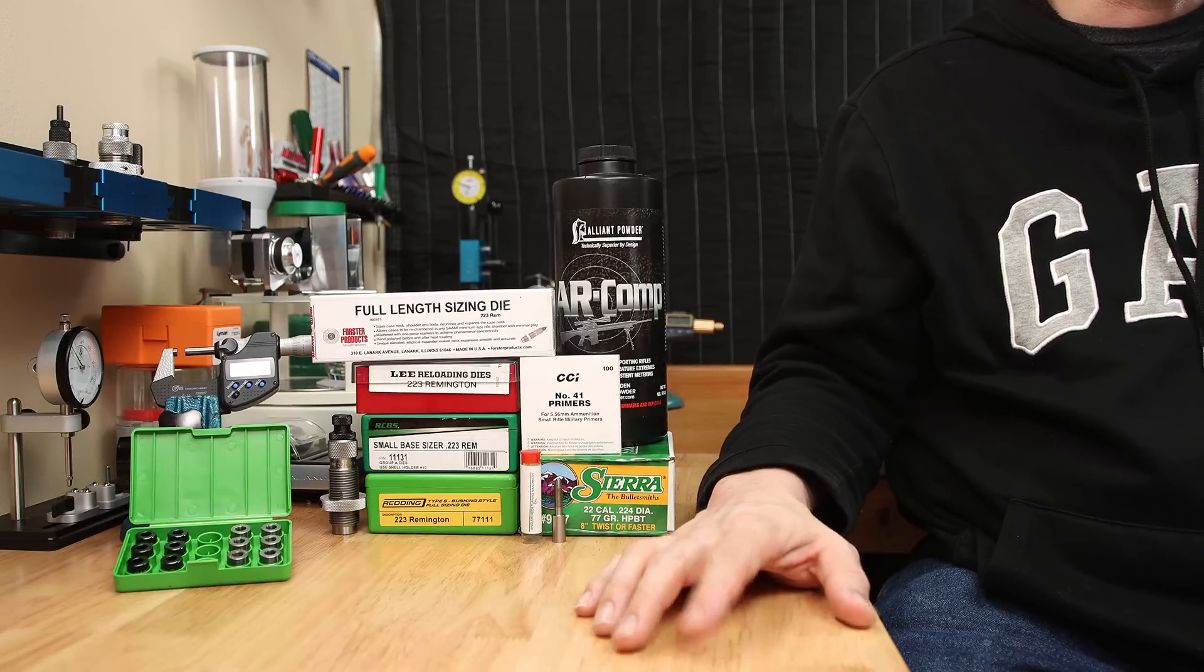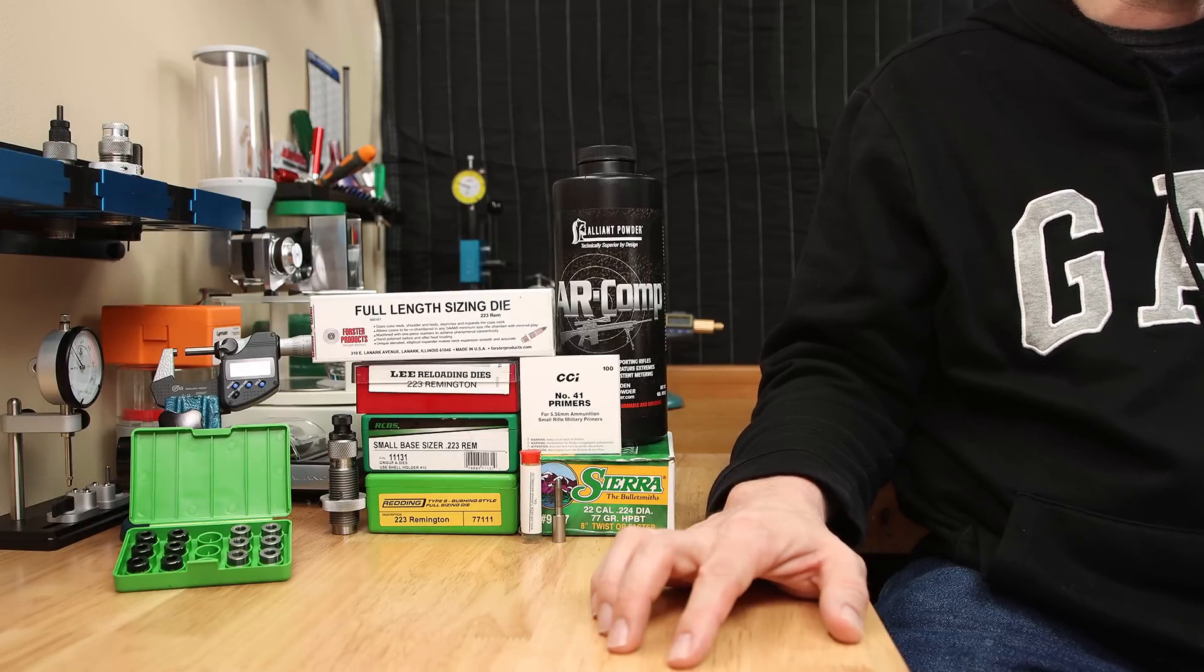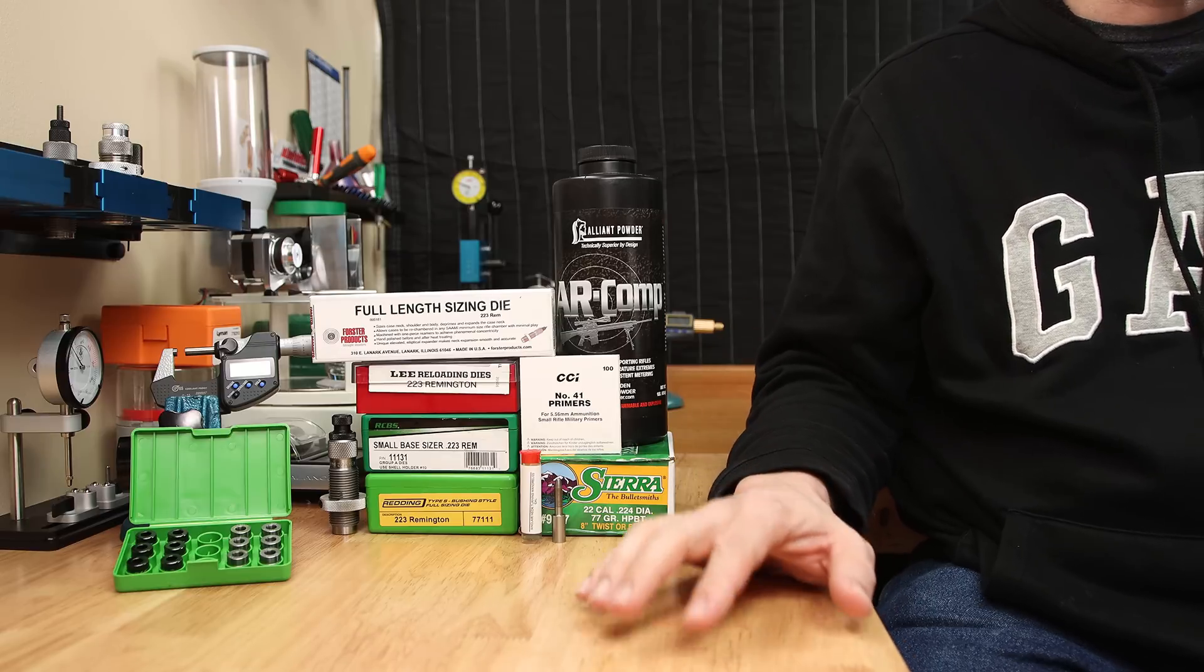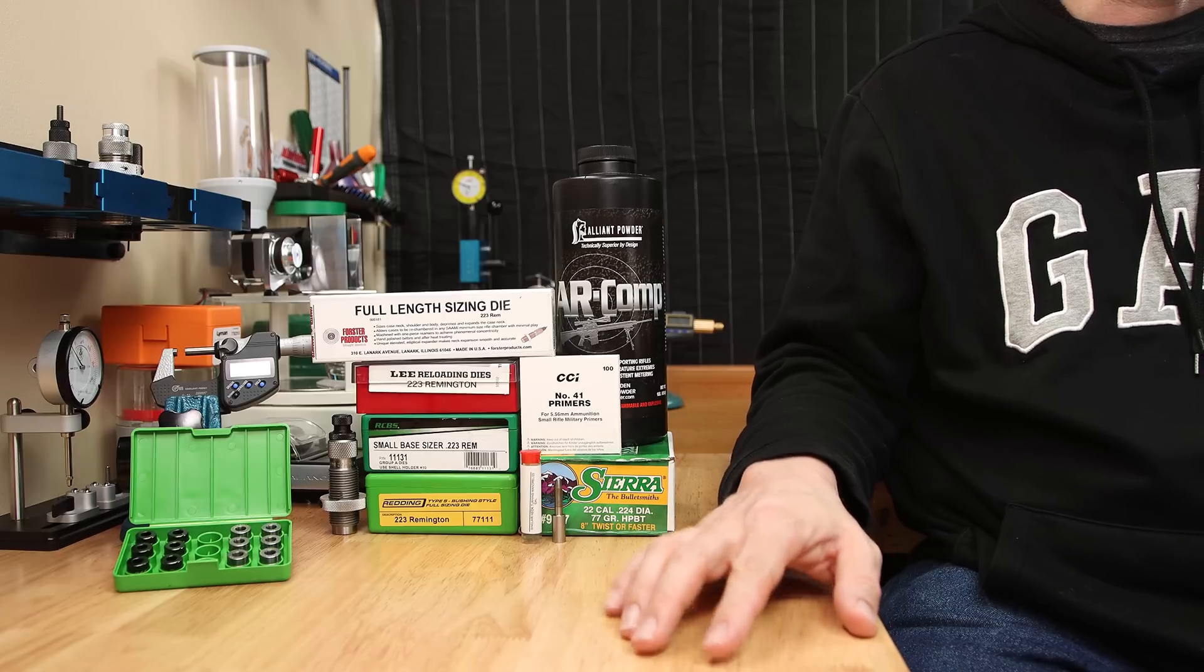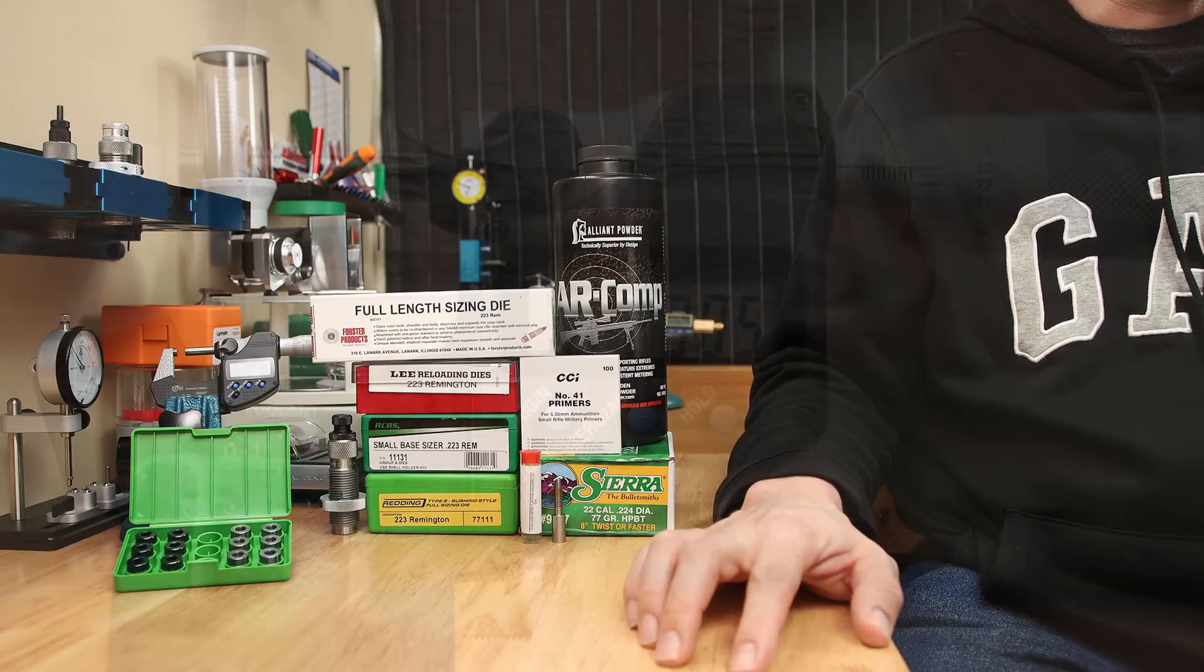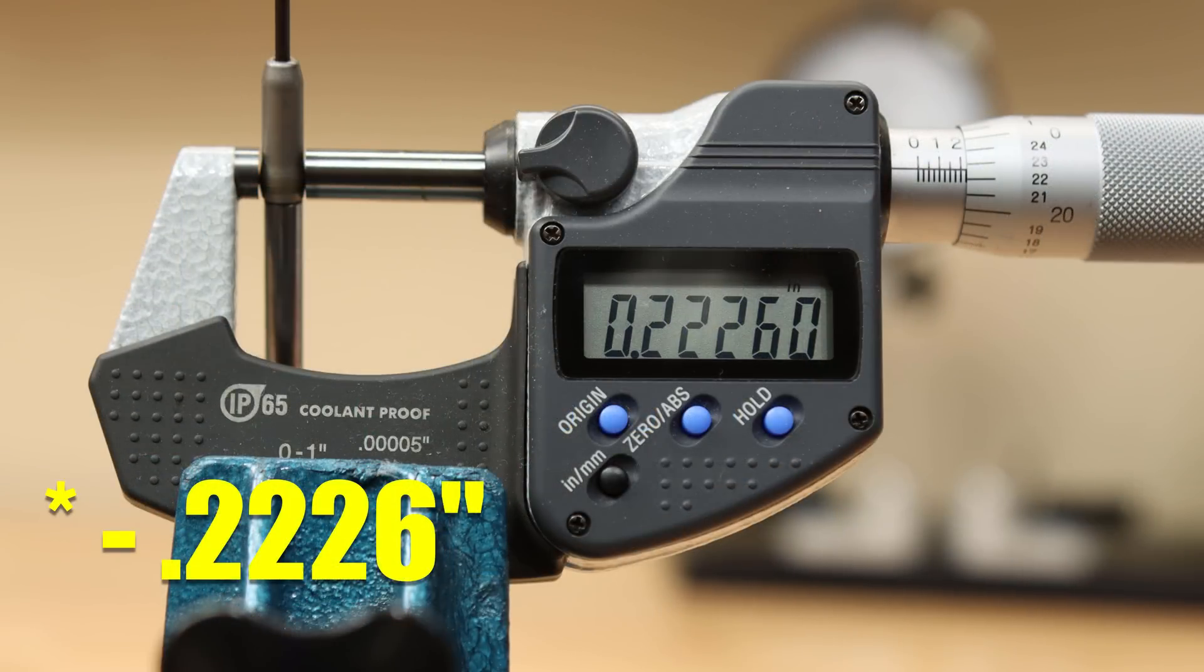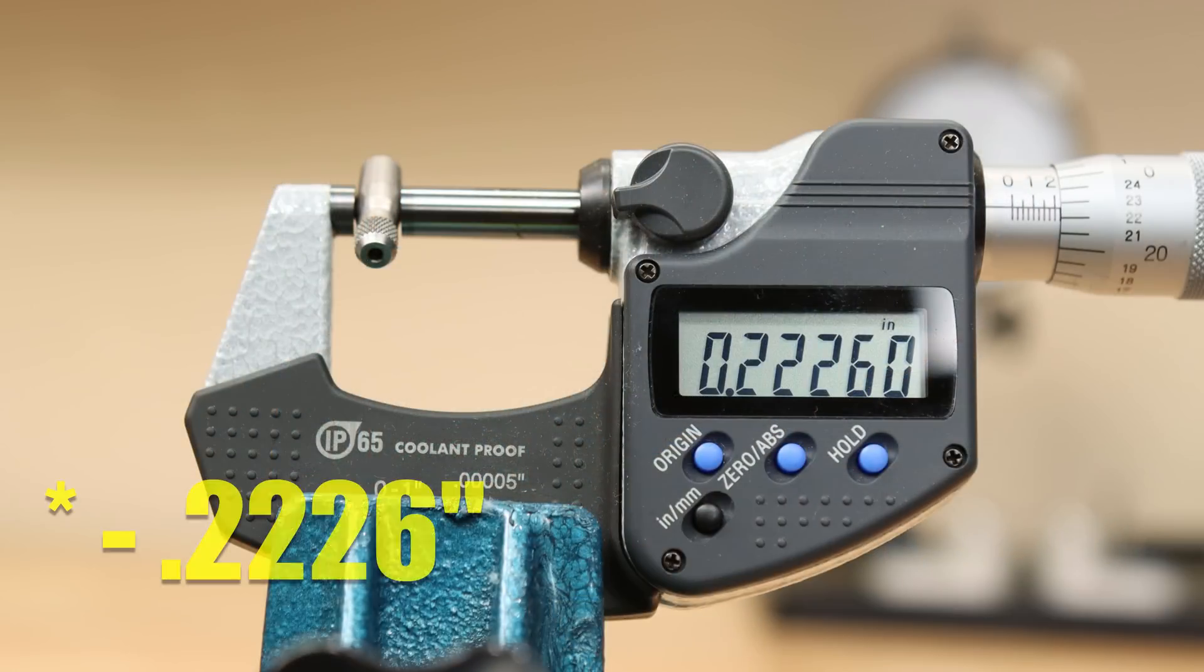After seeing that the factory dies with the stock expanders generally have lower standard deviations compared to the other configurations we tested, I'm asking myself why that might be the case. After I saw these results, I went back and measured the expanders in all of our different configurations for our standard dies. The Forrester's expander was .223 inches, the RCBS was .226 inches, the Lee was .2275 inches, and the Redding was identical to the RCBS at .226 inches.